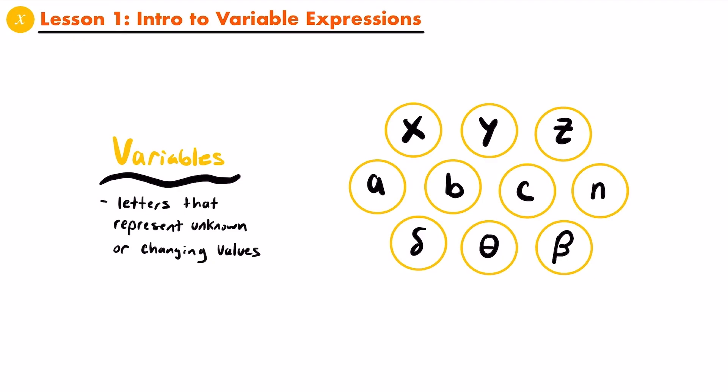When we use letters in this way, we call them variables, since they can represent values that change or vary. And when we write out mathematical expressions — just an arrangement of numbers — and they contain one or more variables, we call those expressions variable expressions.